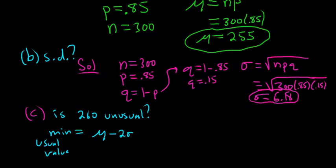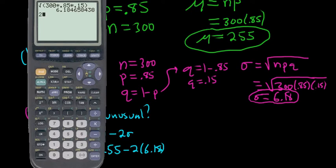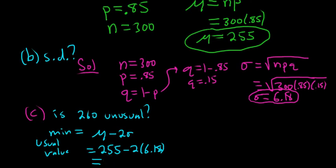So the minimum usual value is μ minus 2σ, right? So that's 255 minus 2 times 6.18. So let's put this in the calculator. So 255 minus 2 times 6.18. So that's 242.64. So 240 would be unusual because it's less than this. Anything smaller than this is unusual.